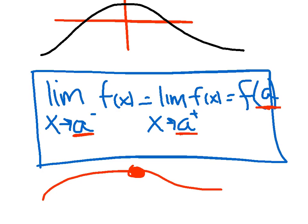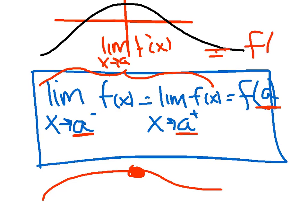Now some people like to shorten that up. If the limit from the left is equal to the limit from the right, you can just say the limit as x approaches a of f(x) is equal to f(a). That's kind of the shortened version, but most people prefer writing out the left, the right, and f of.